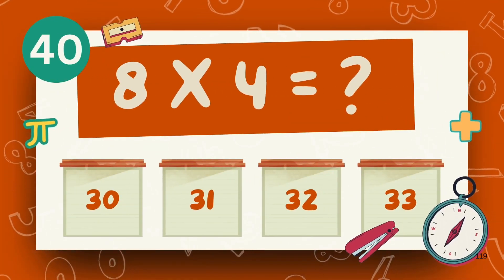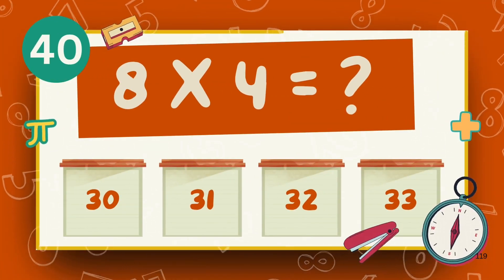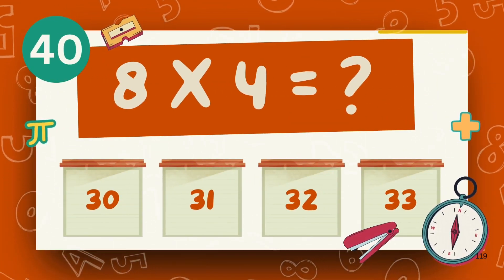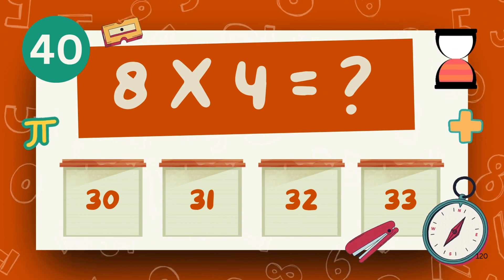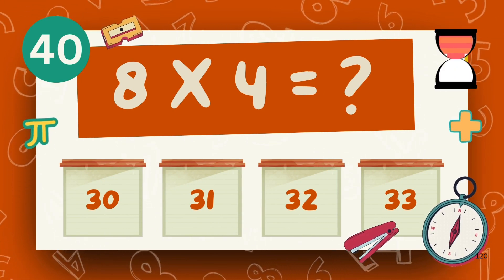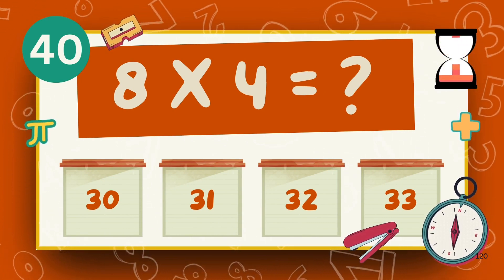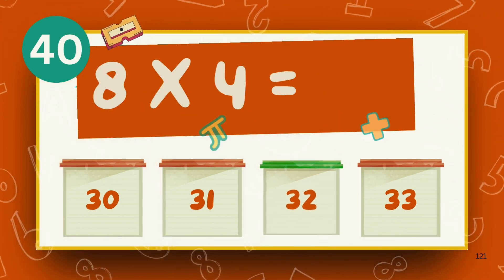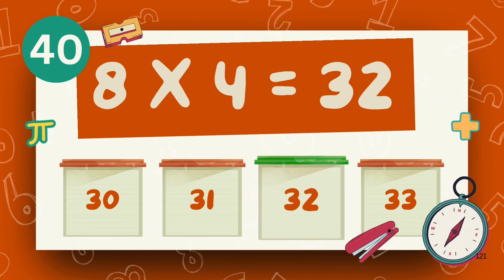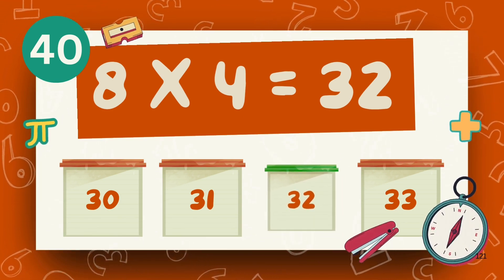What does 8 multiply 4? The answer is 32.